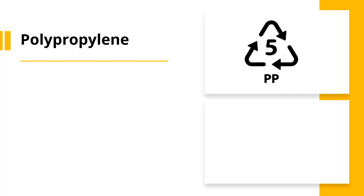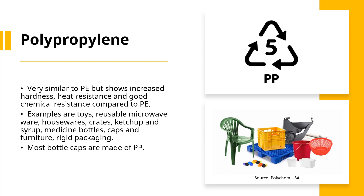Number 5 is given to polypropylene. Polypropylene is very similar to the previously mentioned polyethylene, but it offers the advantage of higher hardness and heat resistance without losing flexibility and chemical resistance. It is a versatile polymer that has many applications. Number 5 can be seen in water bottle caps, reusable microwave wares, houseware, ketchup, syrup and medicine bottles. It is also being used in outdoor furniture, and most bottle caps are made of polypropylene.